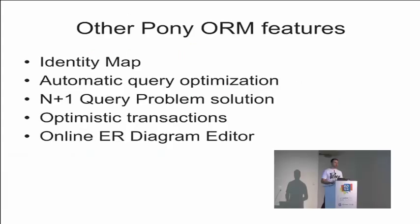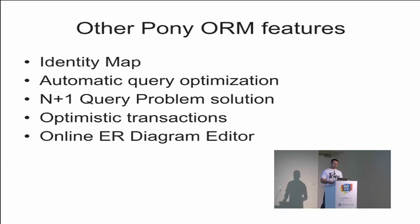Now I would like to tell you about other Pony features. Pony keeps objects in the identity map — it means that each object is loaded only once within the same database session. When we try to get the same object again, no query goes to the database; it will be returned from the map. Pony also has a solution for the N+1 query problem — this is when a mapper generates a lot of unnecessary queries. Pony can also optimize queries; for example, it can substitute a subquery with a left join to improve performance.